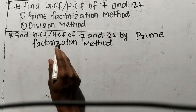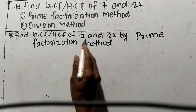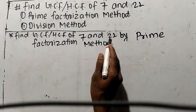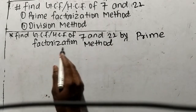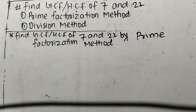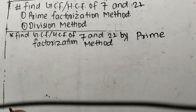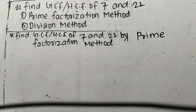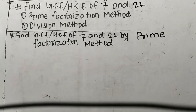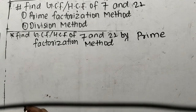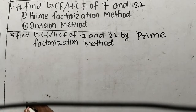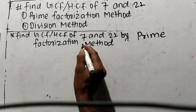Let's find out GCF or HCF of 7 and 21 by prime factorization method. While finding out GCF or HCF by prime factorization method, first of all we have to factorize the given numbers.